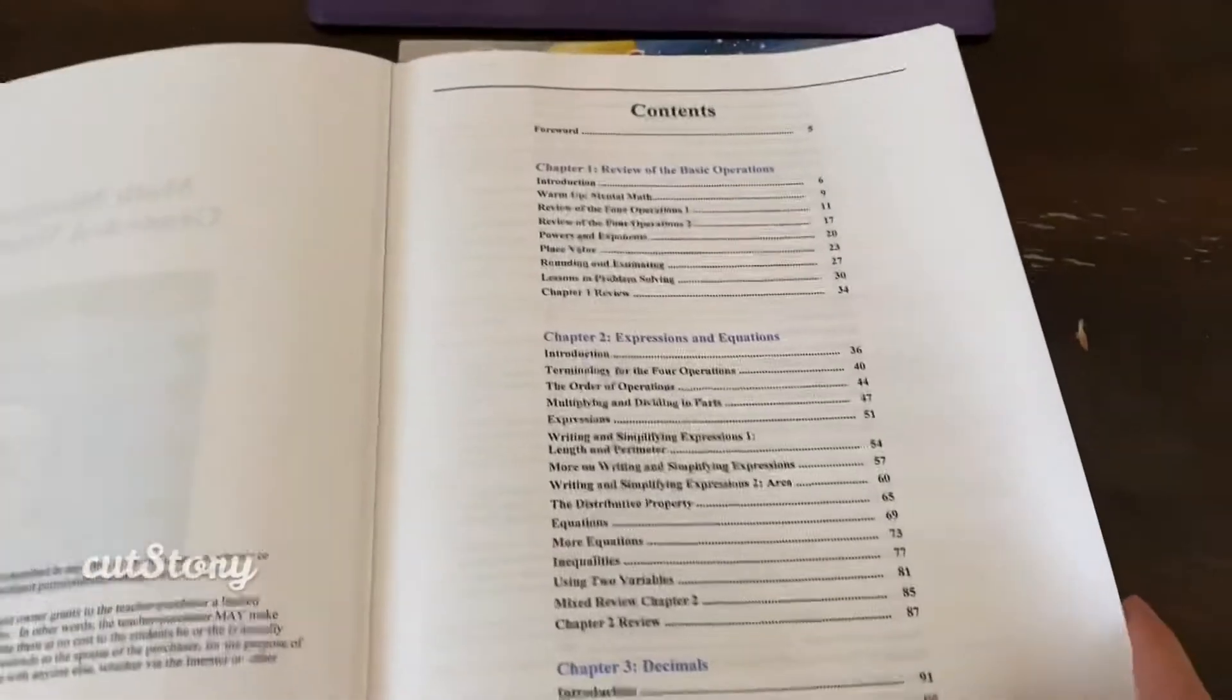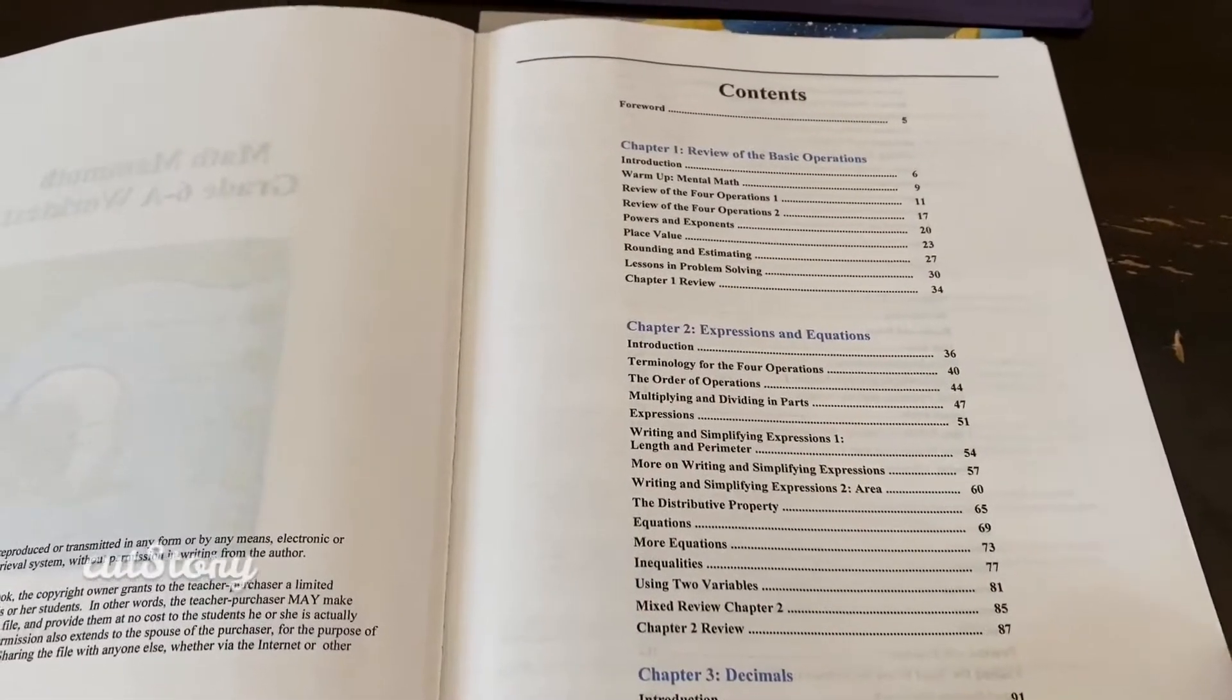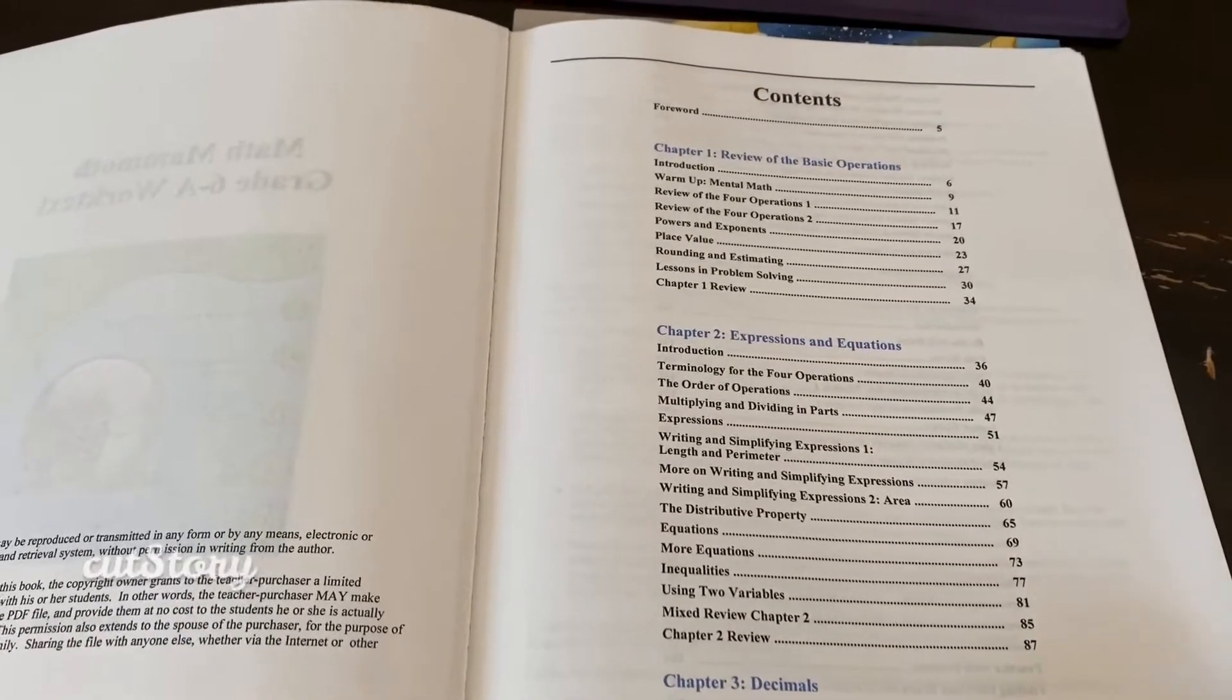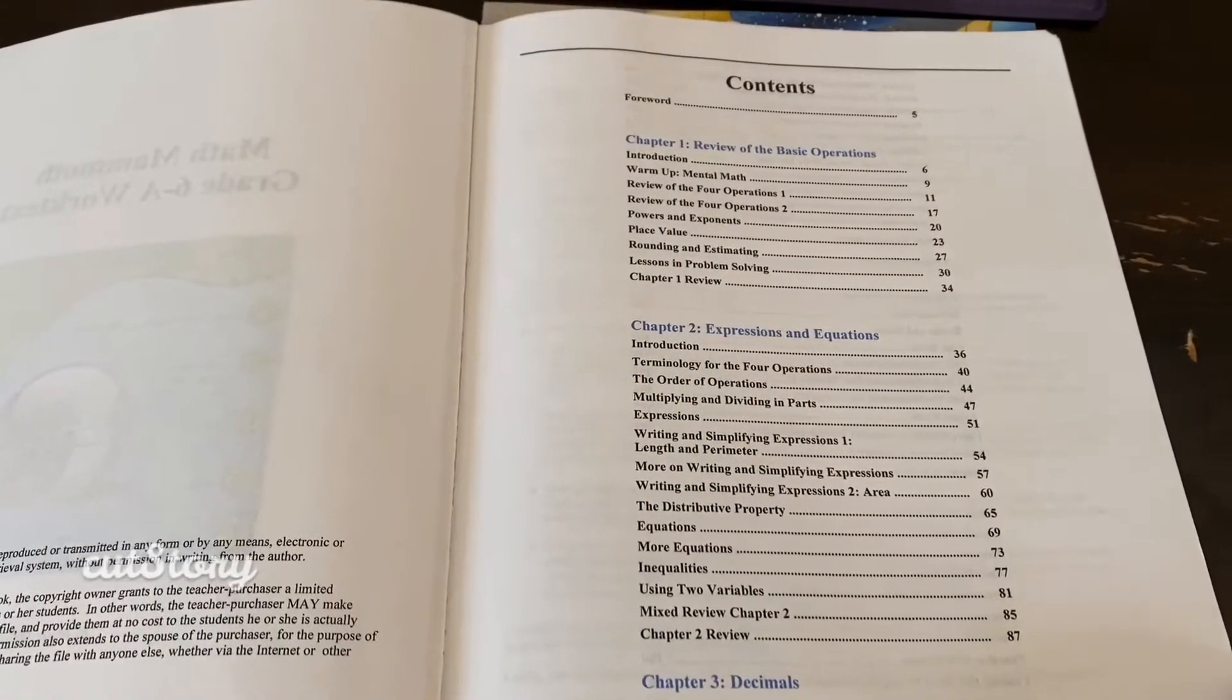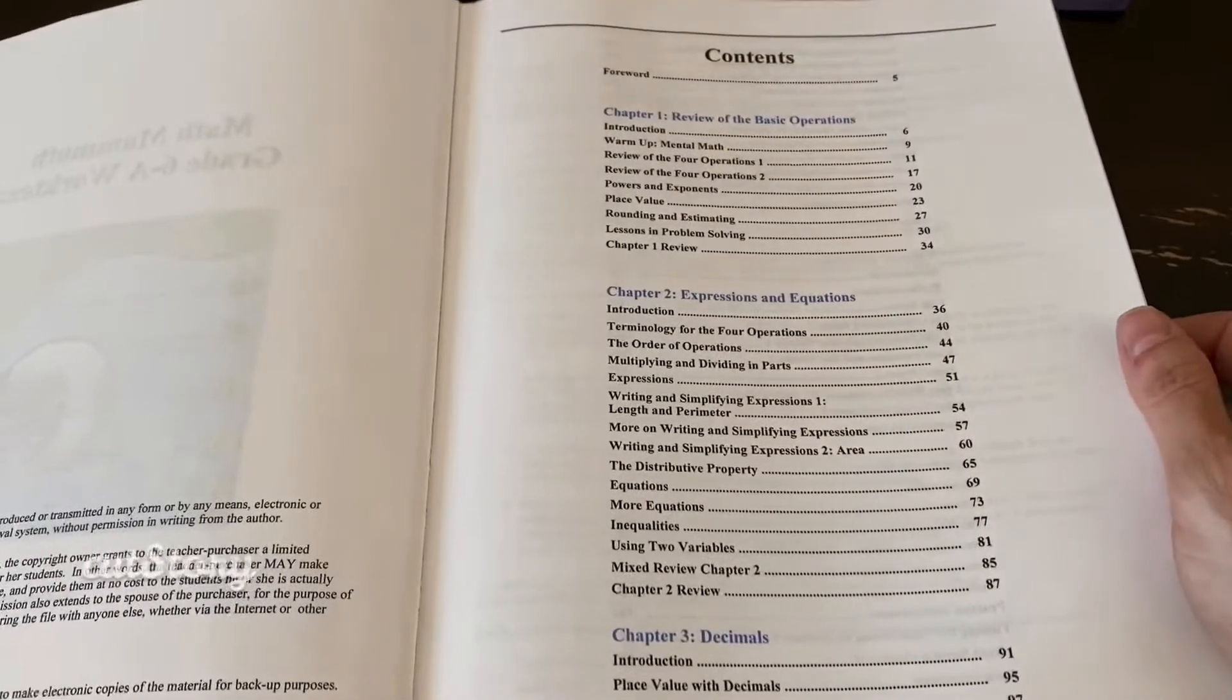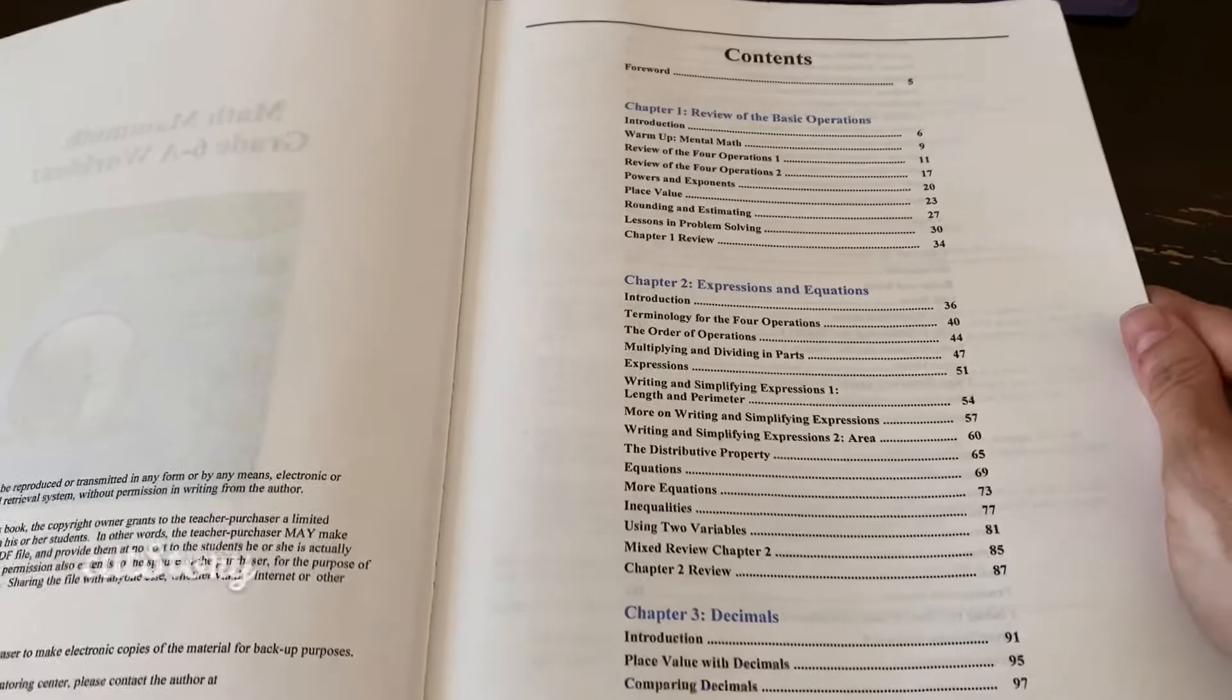The way it works, there are two books and then you can get all of the teacher books and answer keys and tests and everything online. You can go through Math Mammoth, I think it's mathmammoth.com. I usually get the books at Rainbow Resource because they go on sale there sometimes and then I will purchase the PDF version of everything else.